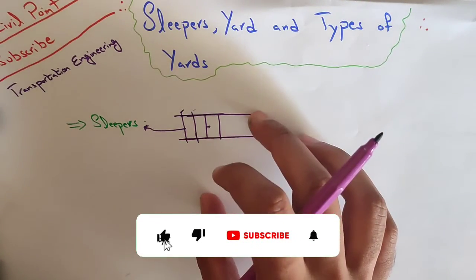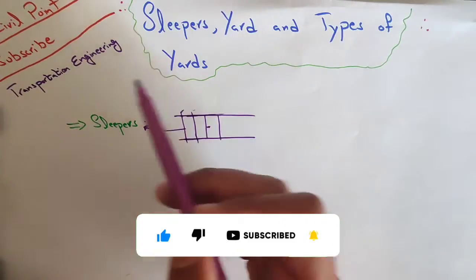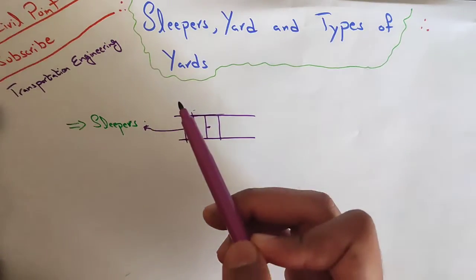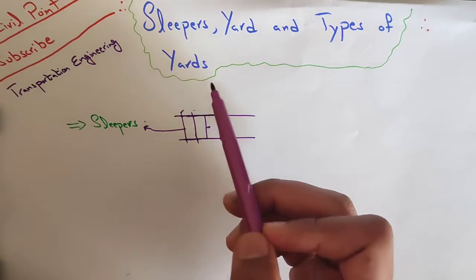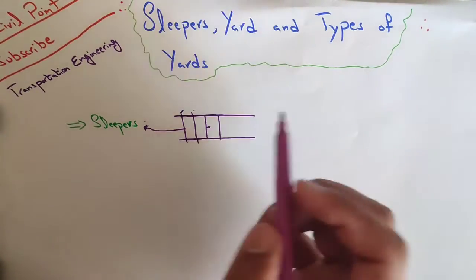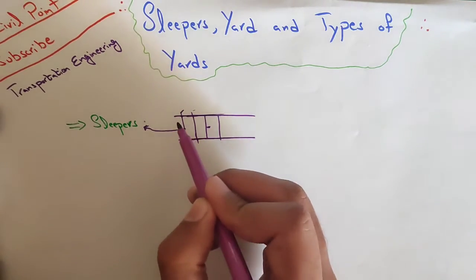Hello guys, welcome to Civil Point, it's Abdullah Maksud. Today we are going to study a topic related to transportation engineering: sleepers, yards, and types of yards. What are sleepers? Sleepers are horizontal components which connect the rails of railway track throughout the railway line.